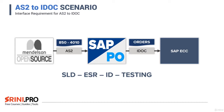We'll be developing the scenarios. The first scenario will be AS2 to IDOC, where we'll use Mendelssohn software to trigger an AS2 message — that message will be an 850 4010. In SAP PO, we'll convert that EDI message into an IDOC and that IDOC will be posted into an SAP ECC system. From a configuration point of view, we will look at how to develop the objects in SLD, ESR, and ID, and we'll do end-to-end testing with the Mendelssohn AS2 software.